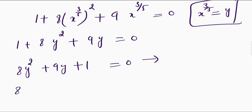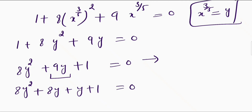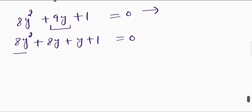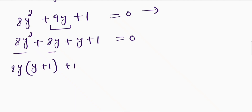So I can write this equation as 8y squared plus 9y — I can write 9y as 8y plus y — plus 1 is equal to 0. Here 8 and y are common so I can take them out. Inside I will be left with y plus 1, and from the remaining terms 1 is common giving y plus 1, is equal to 0.